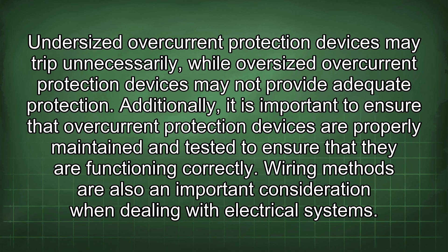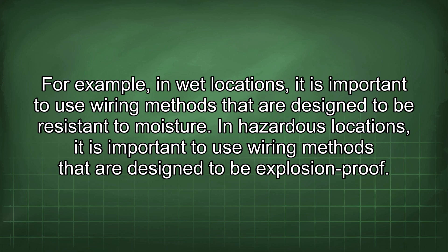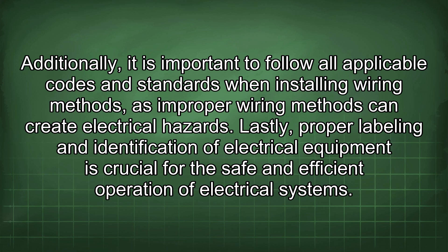Wiring methods are also an important consideration when dealing with electrical systems. Wiring methods refer to the types of conductors and raceways used to install electrical circuits, and there are many types available, each with its own advantages and disadvantages. It is important to select wiring methods appropriate for the specific application and environment. For example, in wet locations, it is important to use wiring methods designed for those conditions. Improper wiring methods can create electrical hazards.